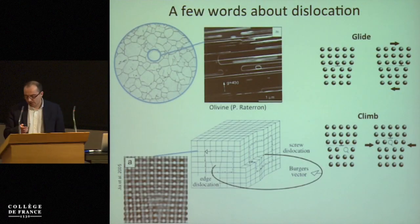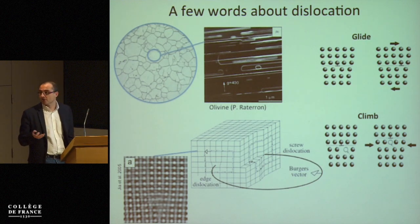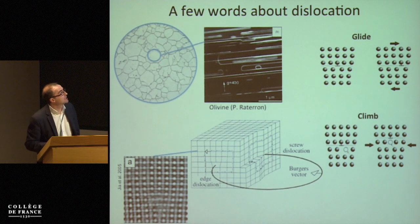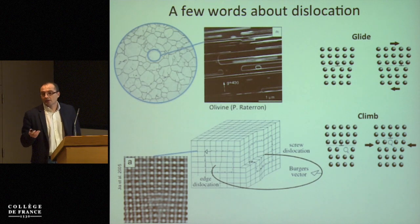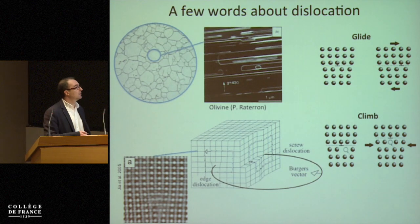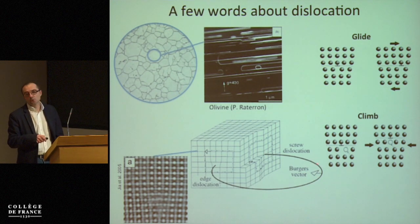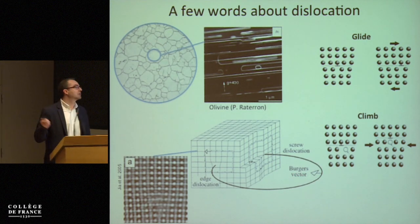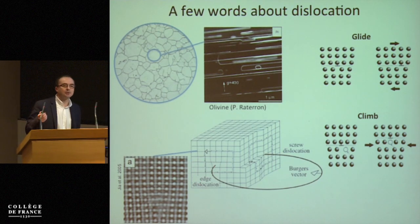Dislocation creep involves dislocation activity. Briefly, a dislocation is a linear defect — they exist as you can see in this TEM micrograph. Dislocations are characterized by a Burgers vector, which is the amount of shear carried by the defect. When the Burgers vector is parallel to the line, we call it a screw dislocation; when it is normal to the line, we call it an edge dislocation.